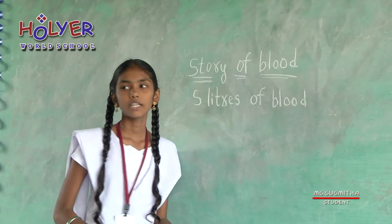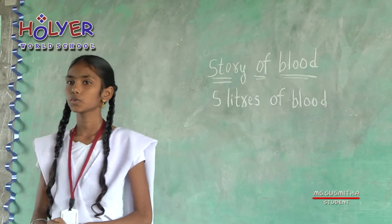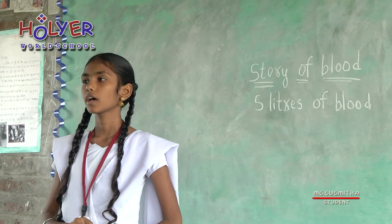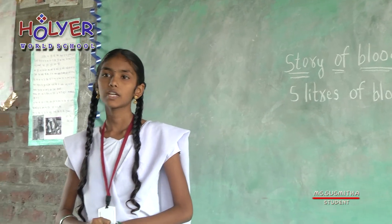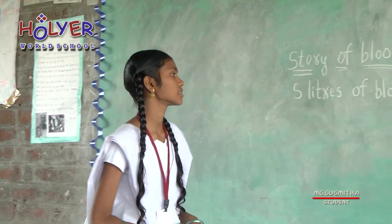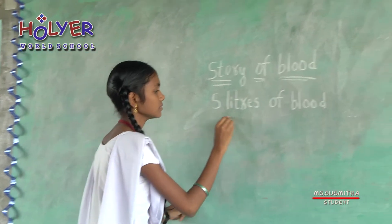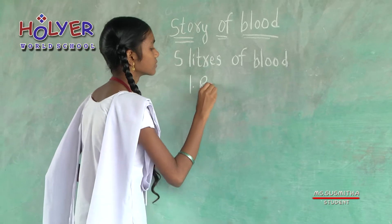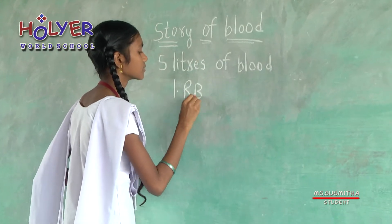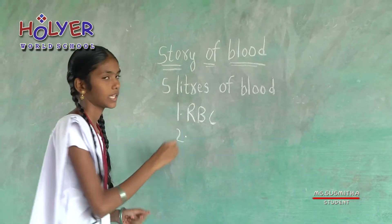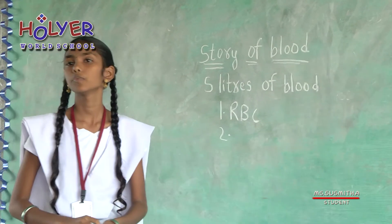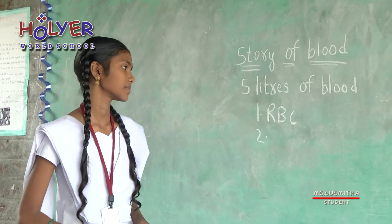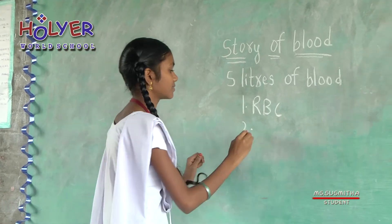The blood is divided into 3 types. 1. RBC, called red blood cells. 2. WBC, meaning white blood cells. 3.